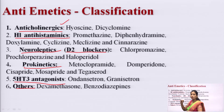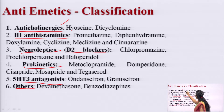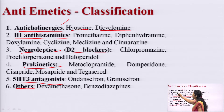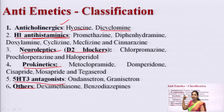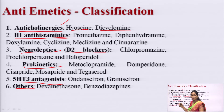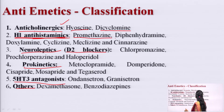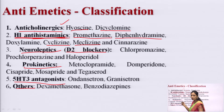Anticholinergic drugs block the cholinergic system to inhibit vomiting sensation. Examples include hyoscine and dicyclomine. H1 antihistamines are drugs used to treat emesis. Examples include promethazine, diphenhydramine, cyclizine, and meclizine. These are drugs that fall under the H1 antihistamines category for treating vomiting.